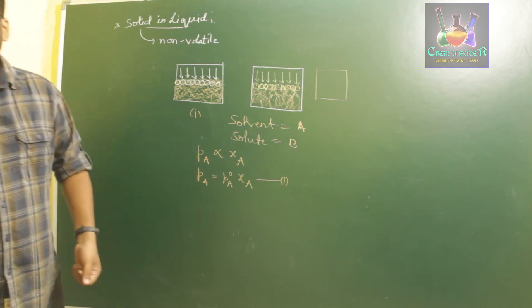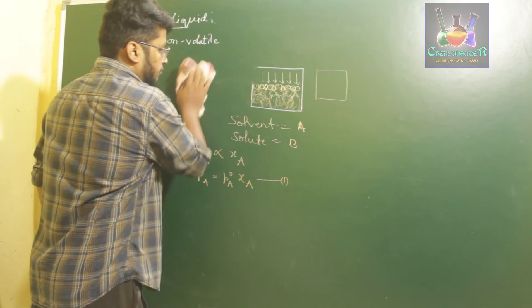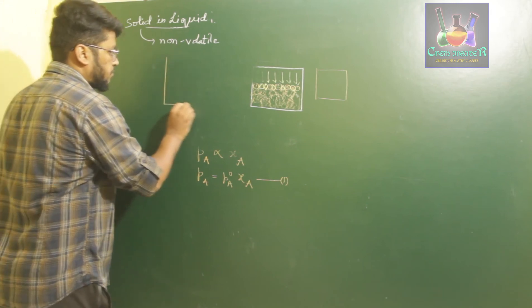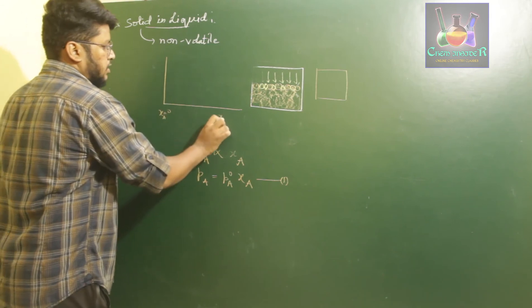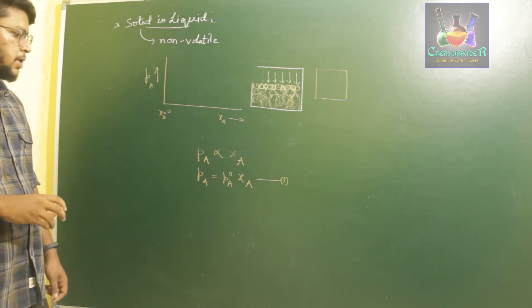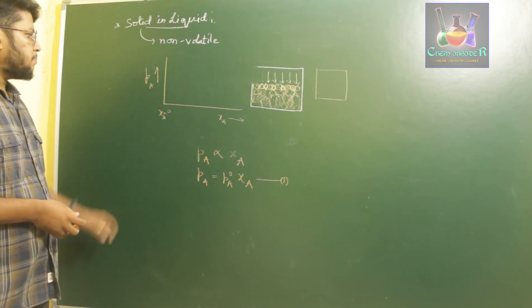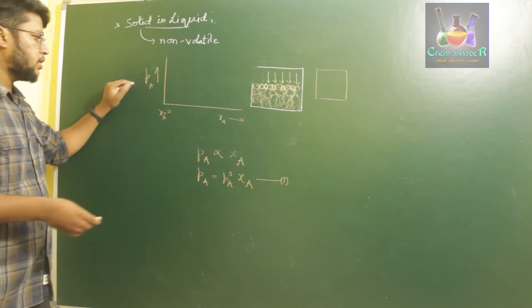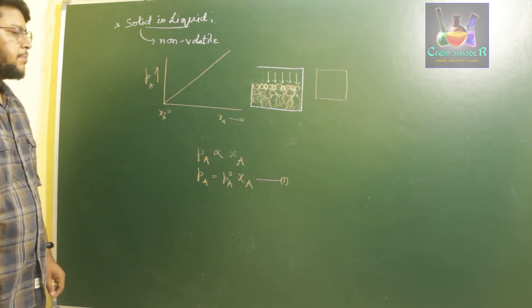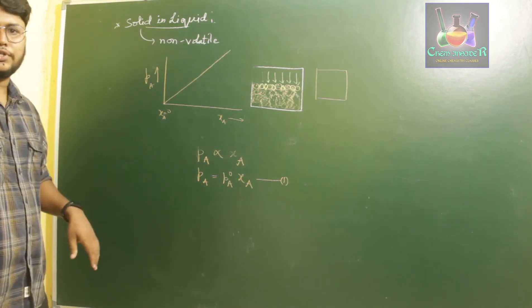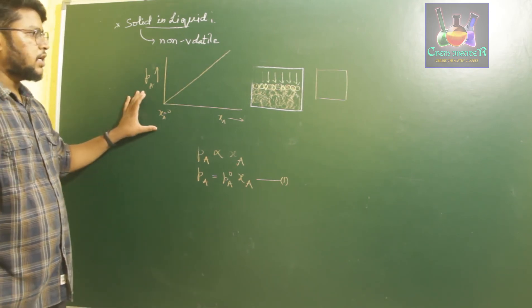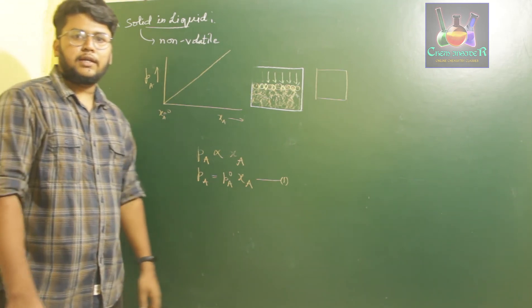On plotting a graph of P_A versus X_A, we obtain a straight line, with X_A increasing along the X-axis and vapor pressure P_A increasing along the Y-axis. So the vapor pressure of the liquid component of a given solid-liquid solution increases with increase in the mole fraction of the solvent. This is the straight line equation obtained for a curve of solid in liquid solutions.